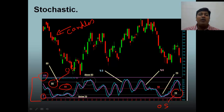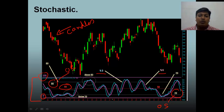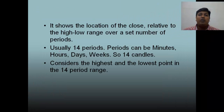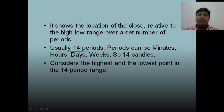Stochastics is an oscillator indicator and it has two bands. Band 1 is called %K and band 2 is called %D. Both %K and %D oscillate between 0 and 100. Stochastics shows the location of the close relative to the high-low range over a set number of periods — usually 14 periods, which could be in minutes, hours, or days.